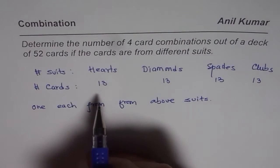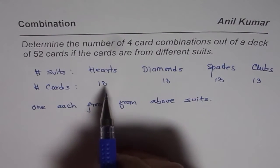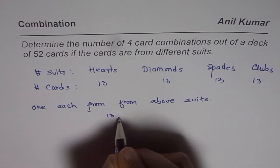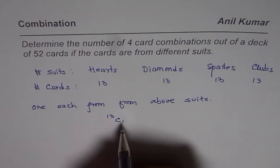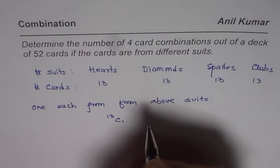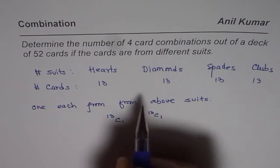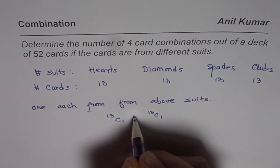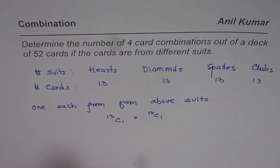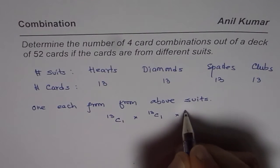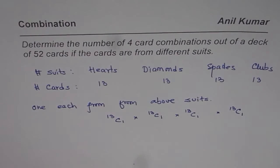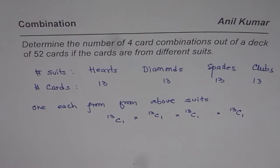The number of ways in which you can draw one card of hearts — since there are thirteen cards — is 13C1. Once you draw that, you have to draw one card of diamonds, so it is 13C1. Since these conditions are joined by AND, they get multiplied. Similarly, you multiply with one card of spades and one card from clubs, each giving 13C1.